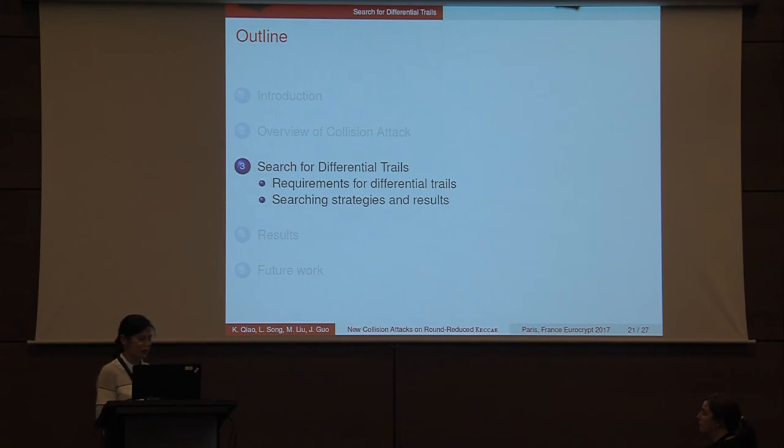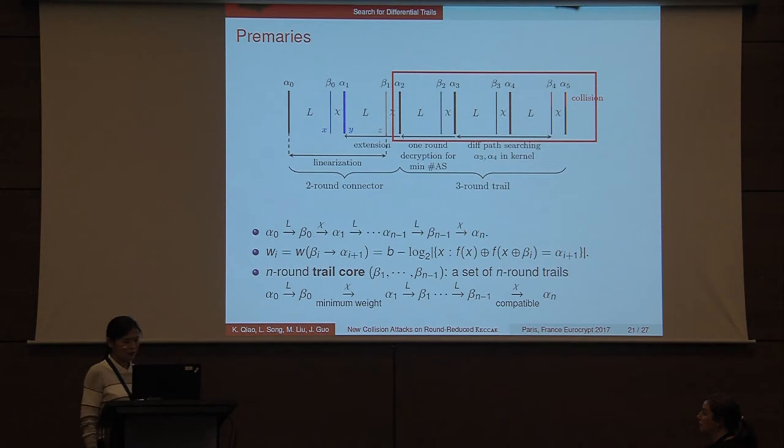So far, we talked about the algebraic part of the method. Now, let's see how to search for differential trails of high probability. An n-round differential trail is of the form of iterated alpha i, beta i. The weight of the differential from beta i over chi layer is denoted by w_i. An n-round trial core defined by a series of beta i's is a set of n-round trials where the first round is of minimum weight, and the last round, all compatible alpha n's are considered.